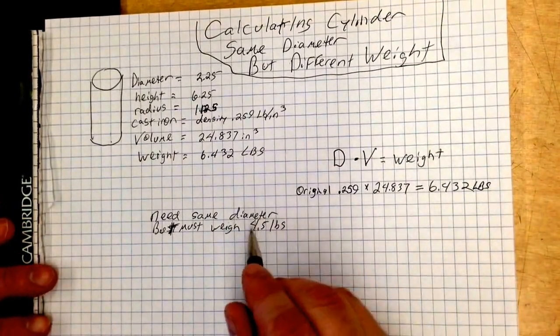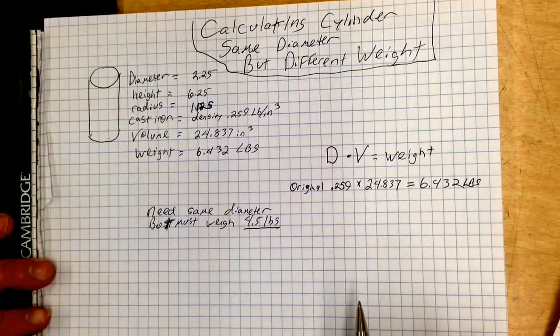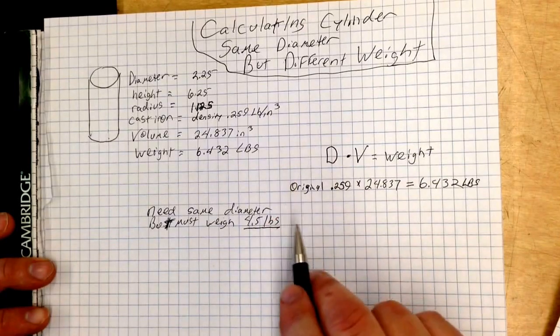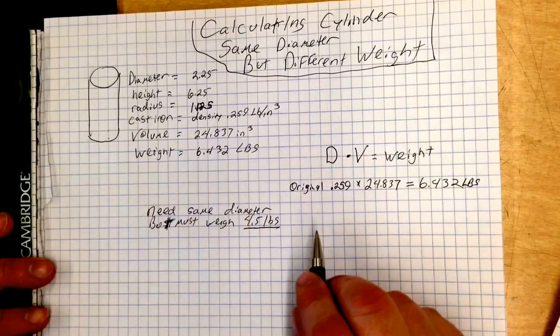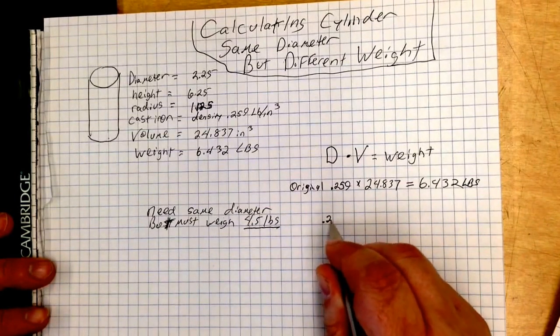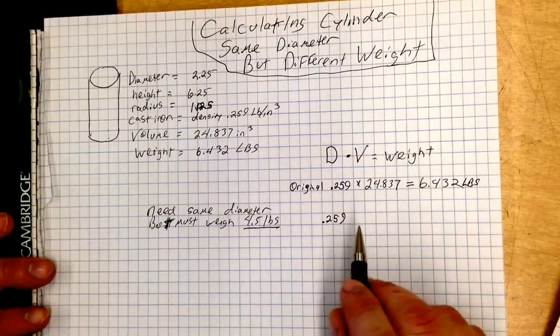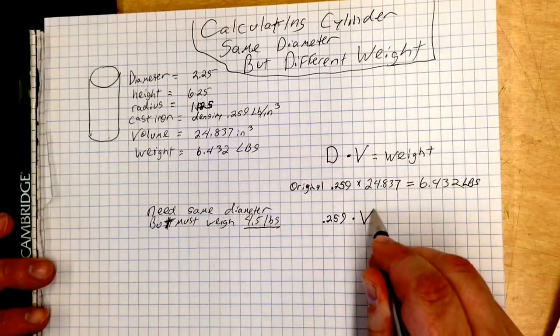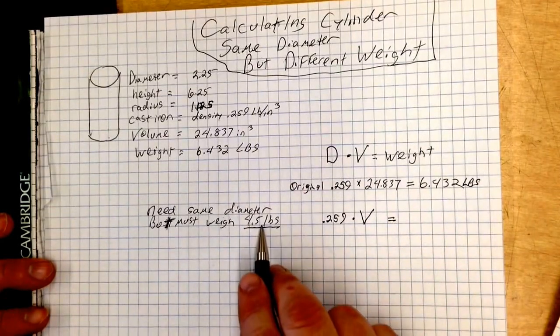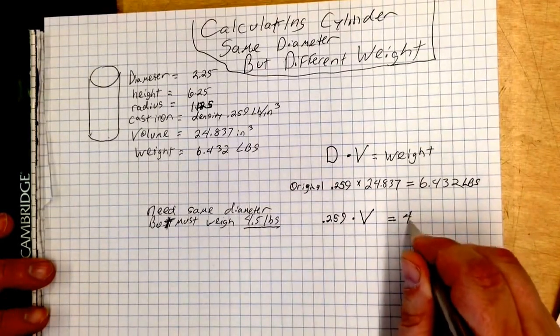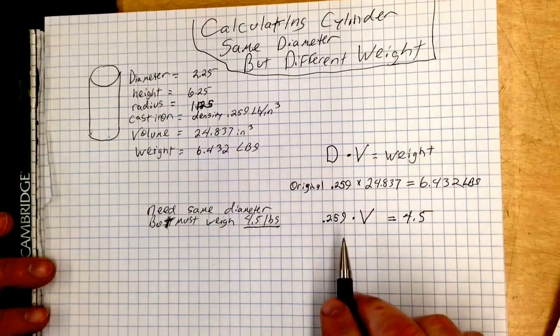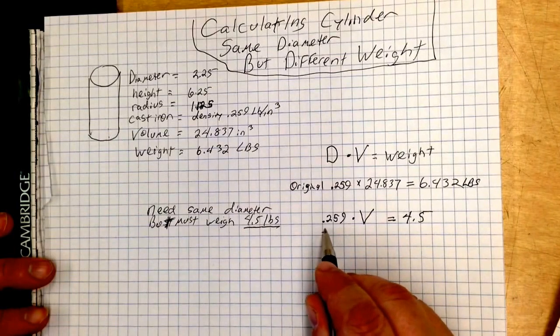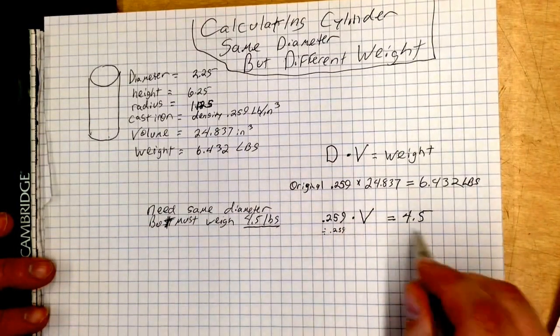Now, we know that density isn't going to change. It's still going to be made out of cast iron, so we're going to plug in the numbers that we know. Cast iron is 0.259, and then we're going to multiply that times volume. We don't have the volume yet, and we know that it needs to weigh 4.5 pounds. Now, this is pretty easy. We can just figure out the new volume by dividing 0.259 from both sides.